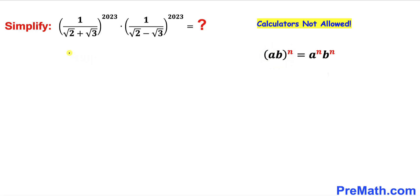Therefore, this given expression could be written as 1 divided by square root of 2 plus square root of 3, times 1 divided by square root of 2 minus square root of 3, and whole power 2023. Here I have brought this fraction times this fraction as well.